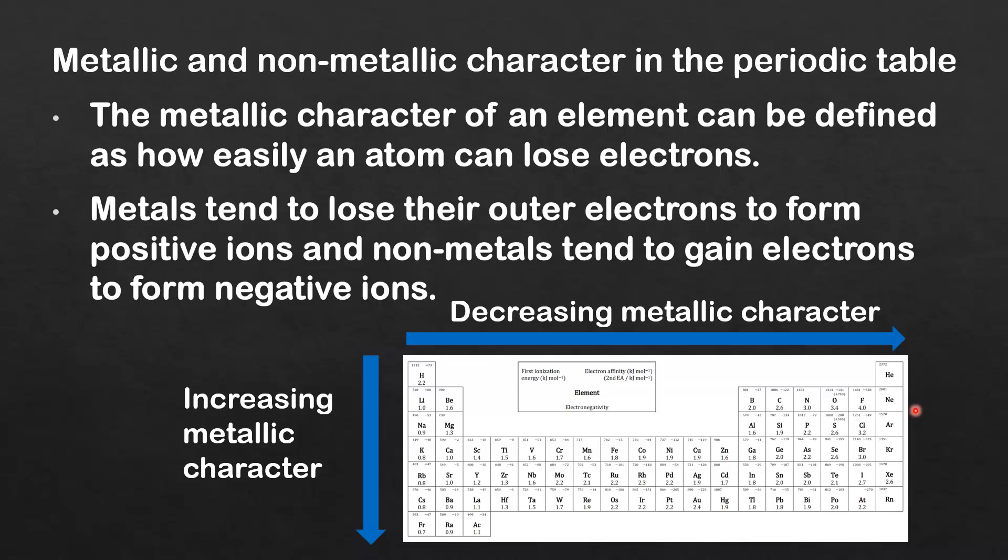Here we have the trend in metallic character in the periodic table. From left to right across a period we have decreasing metallic character, and in a group from top to bottom we have increasing metallic character.